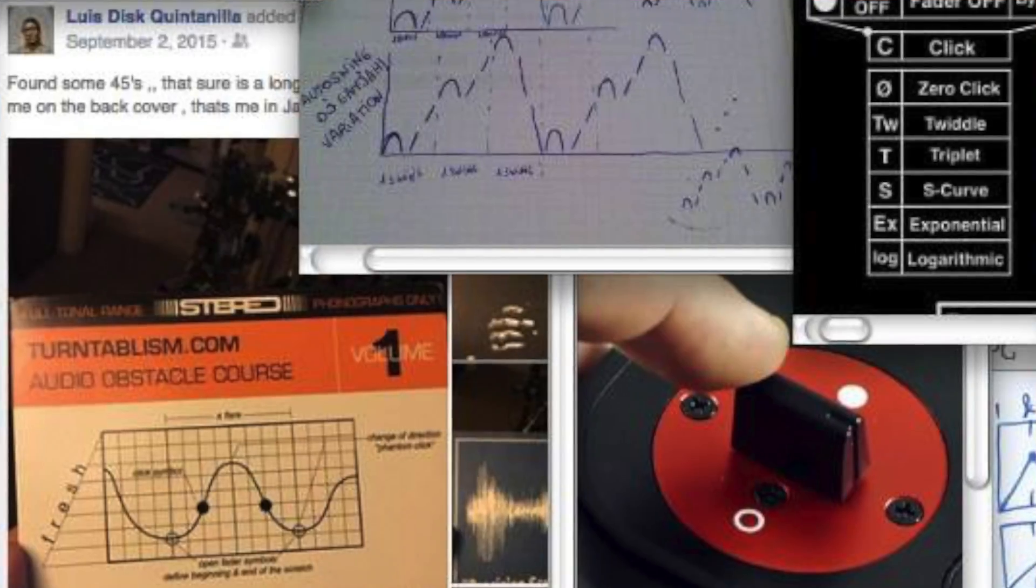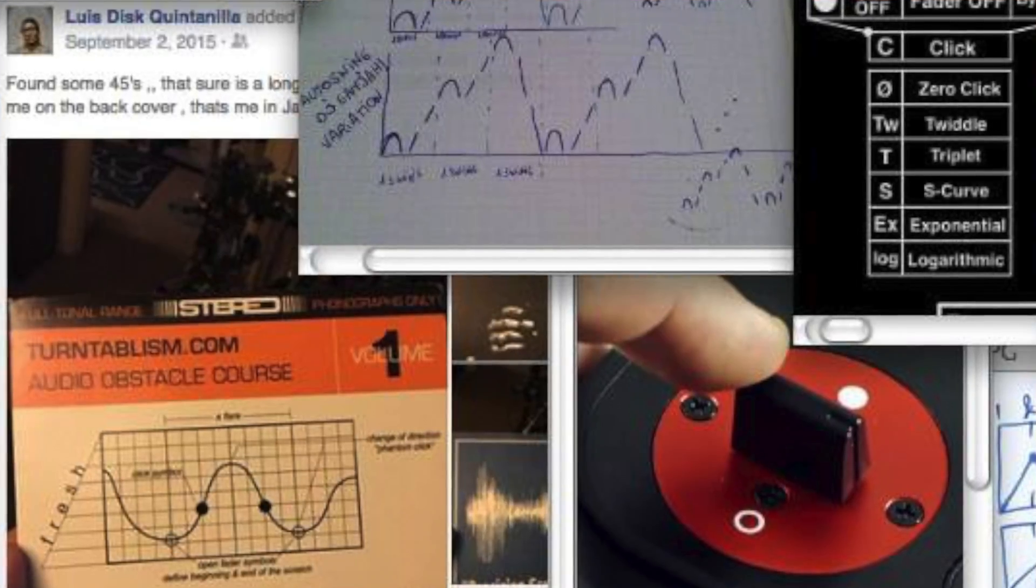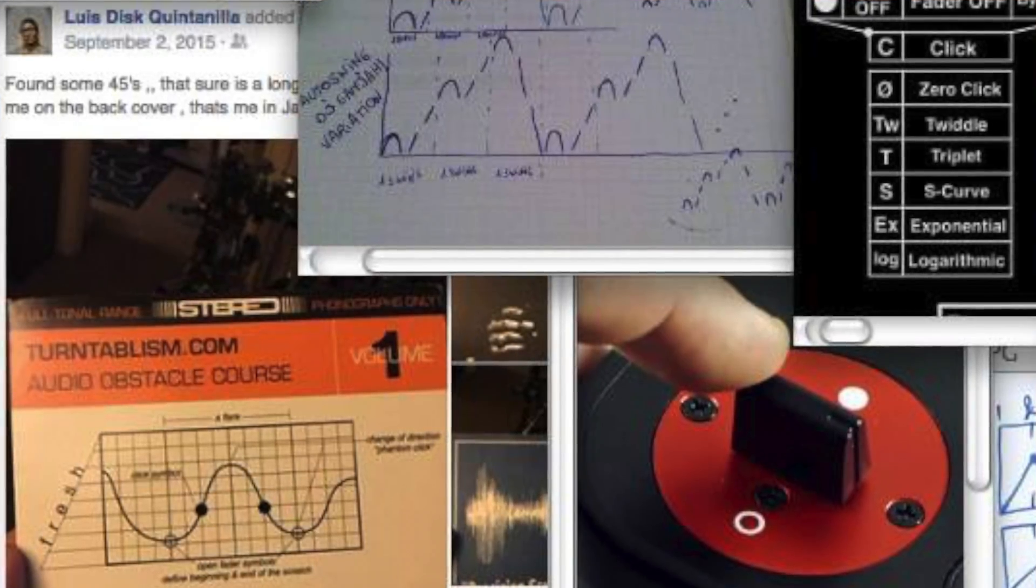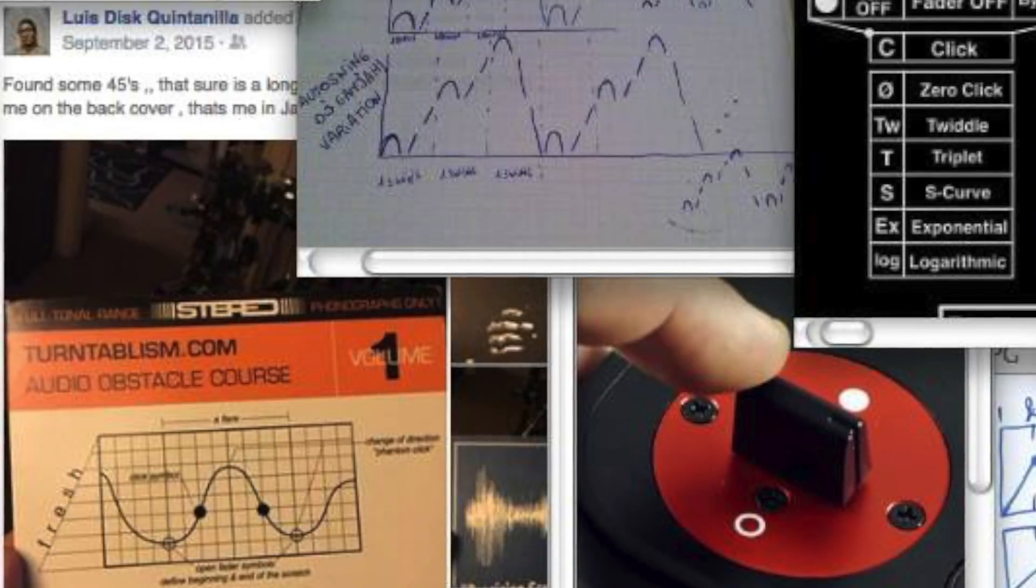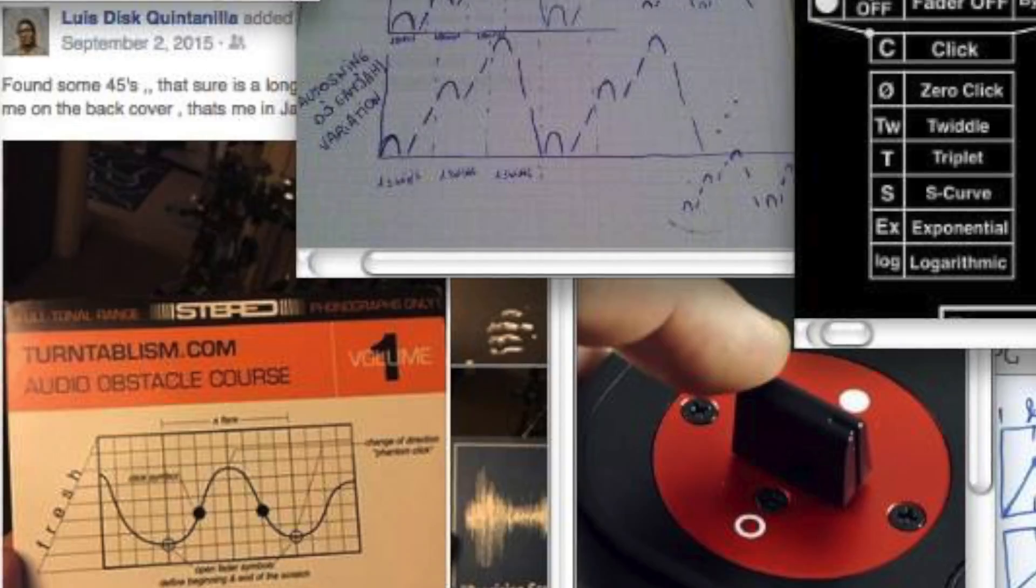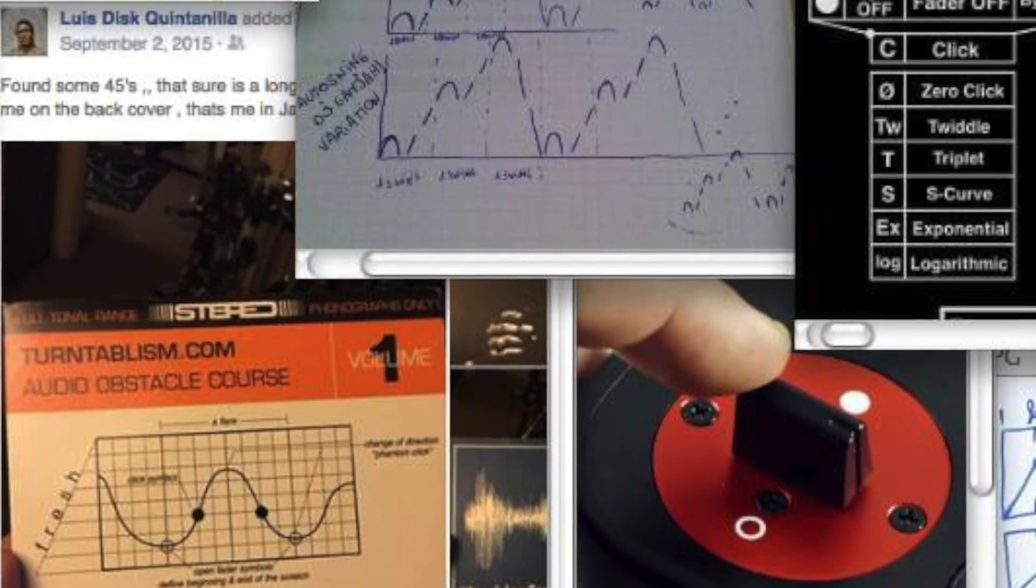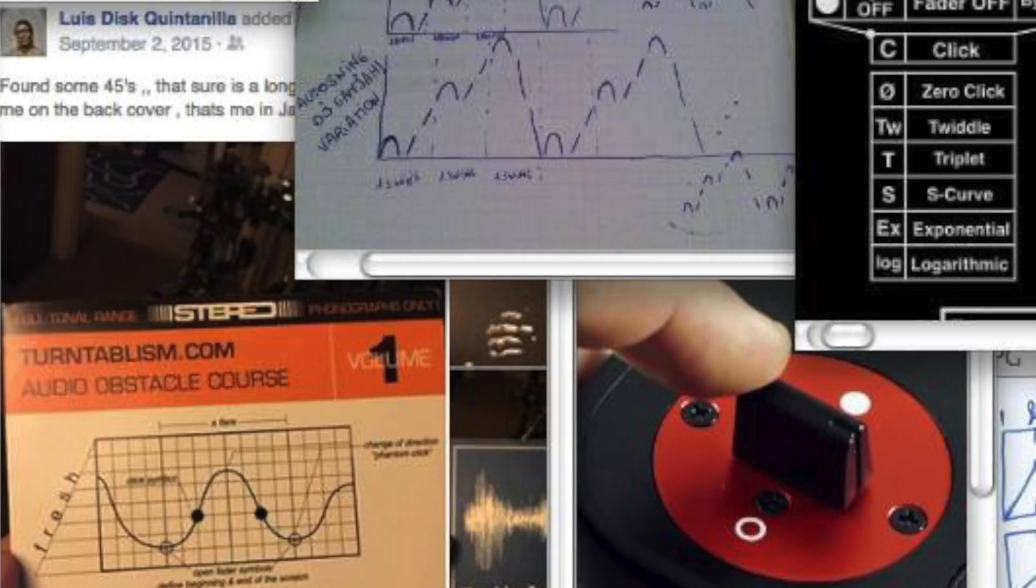At the bottom left is a screenshot of turntablism pioneer DJ Disc, who invented many key scratches such as the Orbit, in his studio with a turntablism.com 45 release from over 15 years ago with TTM graphics on the front cover.